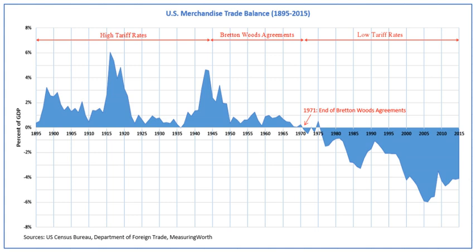The Bretton Woods System of Monetary Management established the rules for commercial and financial relations among the United States, Canada, Western Europe, Australia, and Japan after the 1944 Bretton Woods Agreement.